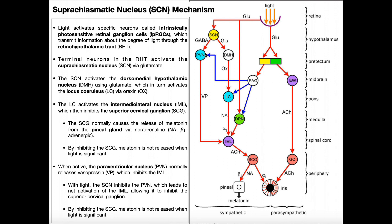The paraventricular nucleus's normal function — when it's dark out — is to inhibit the IML. It releases vasopressin, or VP, which acts to inhibit the intermediolateral nucleus. But when there's light, we want the IML to be active, so it makes sense for the suprachiasmatic nucleus to inhibit the paraventricular nucleus via GABA. By inhibiting the PVN, the PVN is no longer able to inhibit the IML, and so by default the intermediolateral nucleus becomes activated.